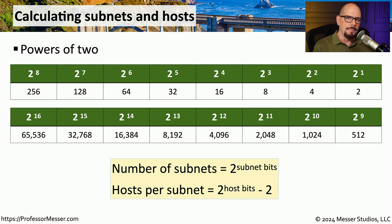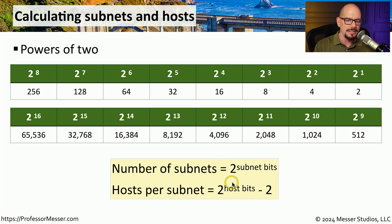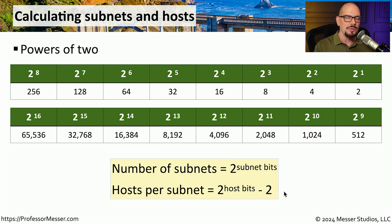We've been doing a lot of these calculations in binary and then converting back to decimal, but that process takes time. A faster way is to use a list of the powers of two — for example, 2¹=2, 2²=4, 2³=8, and so on. To calculate the number of subnets, use two to the power of the number of subnet bits. The number of hosts per subnet is two to the number of host bits, minus two — that subtraction accounts for the network address and the broadcast address, with everything in the middle being usable host addresses.